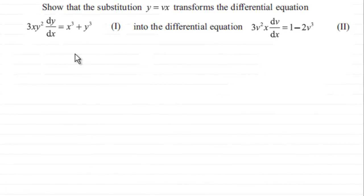Hi. Now what we've got to do here is show that this substitution y equals v times x transforms the differential equation 3xy squared dy dx equals x cubed plus y cubed, which we're calling equation 1, into the differential equation 3v squared x dv by dx equals 1 minus 2v cubed, and this is equation 2.